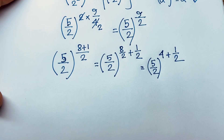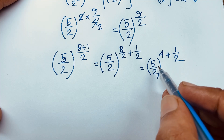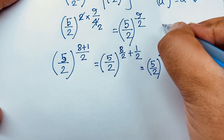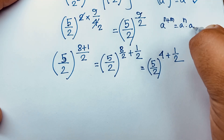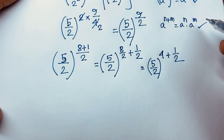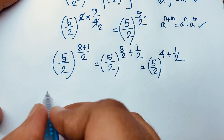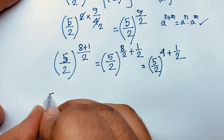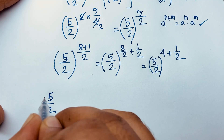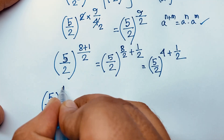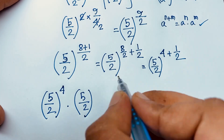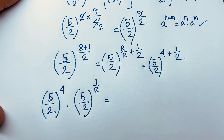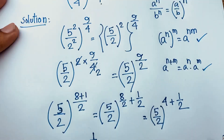We apply the exponential law: a to the power n plus m equals a to the power n times a to the power m. So the expression becomes (5 over 2) to the power 4, times (5 over 2) to the power 1 over 2.